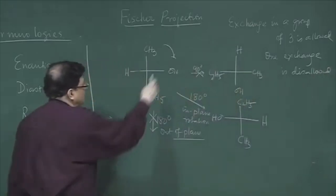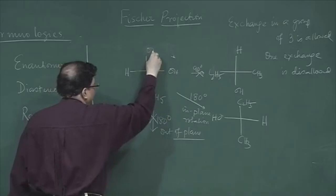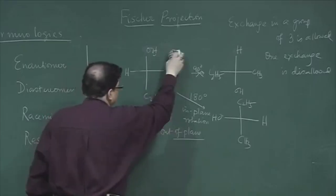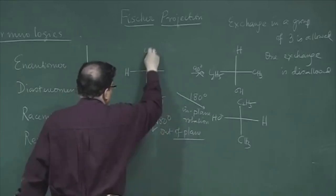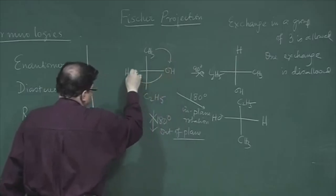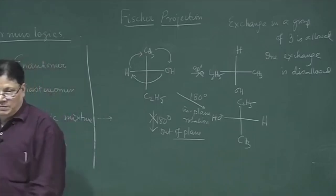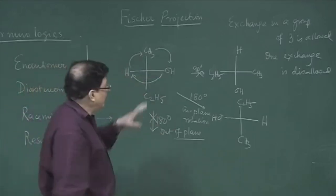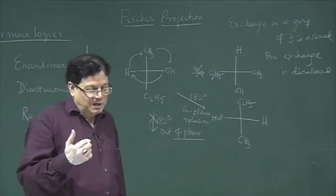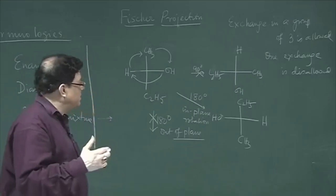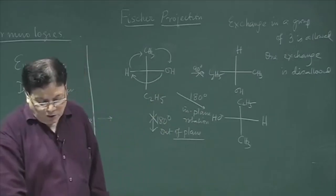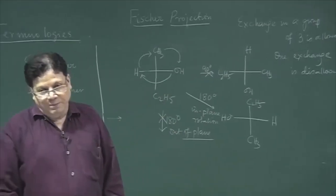What does not change the molecule is an exchange in a group of three — a cyclic permutation of three substituents. For example, moving methyl to where OH was, OH to where H was, and H to where methyl was. That is called an exchange in a group of three and is allowed. One exchange of two groups is disallowed. This completes the Fischer projection formula; we will return to it when discussing absolute configuration.